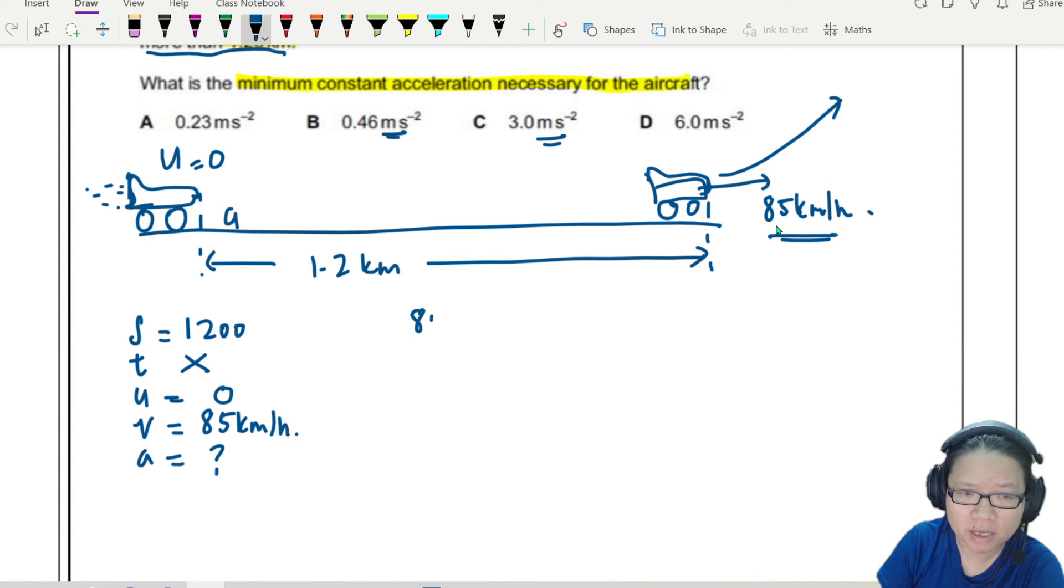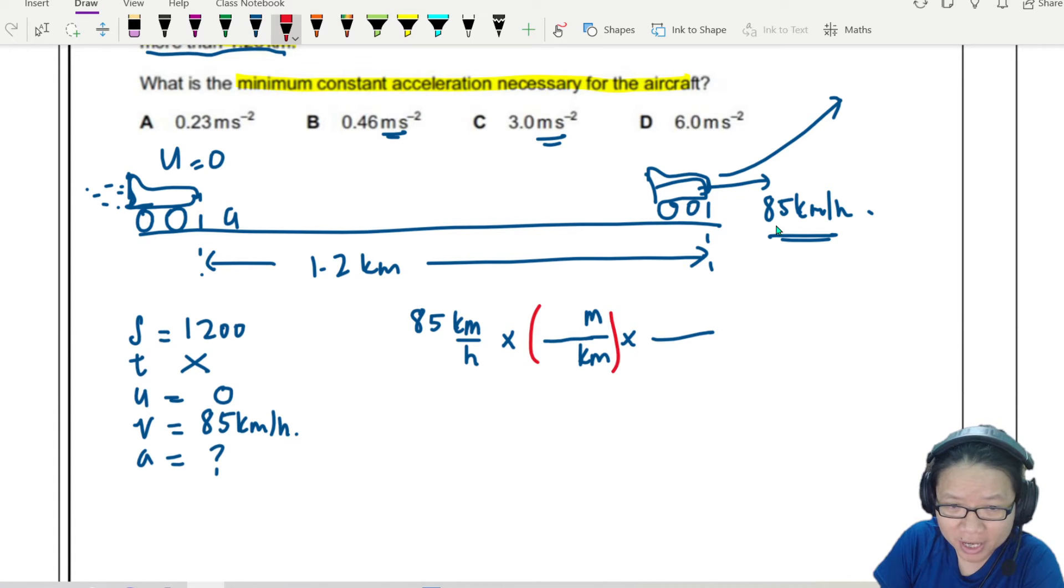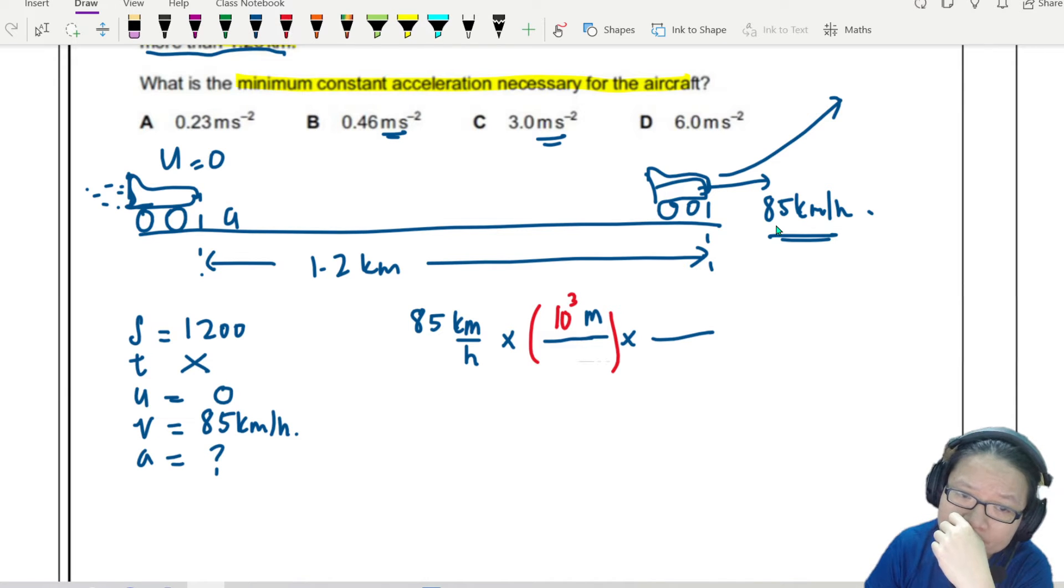First things first. I'm going to convert 85 km per hour. I want to change it to meter per second. How to change? Well, I have this technique. I do this. So I ask myself, what unit do I want? Miss, I don't want km. I want meter. Yes, correct. So then for this red bracket to be legit, I need to multiply by 1. So then I'm thinking to myself, kilo is 10 to the power of 3. Right? Kilo is 10 to the power of 3.